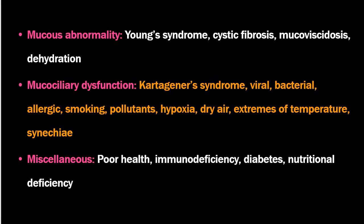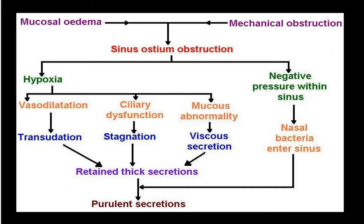Systemic conditions like cor pulmonale, immunodeficiency, diabetes, and nutritional deficiency are common predisposing factors. In pathology, mucosal edema and mechanical obstruction lead to sinus ostium obstruction, which leads to hypoxia causing vasodilation, ciliary dysfunction, or mucous abnormality. Vasodilation leads to transudation, ciliary dysfunction leads to stagnation, and mucous abnormality leads to viscous secretion.